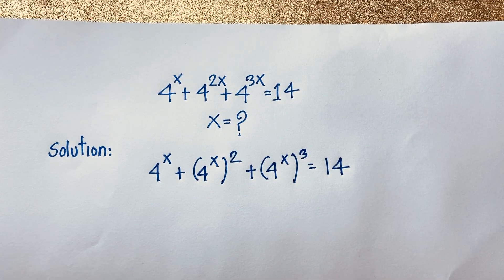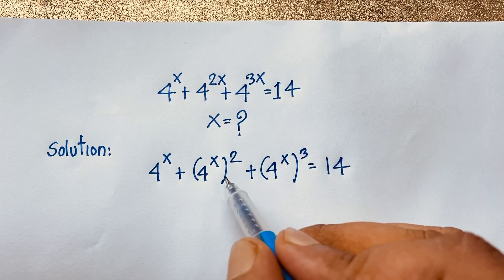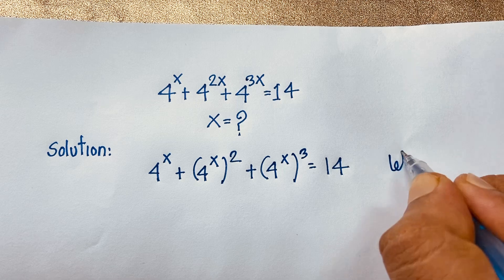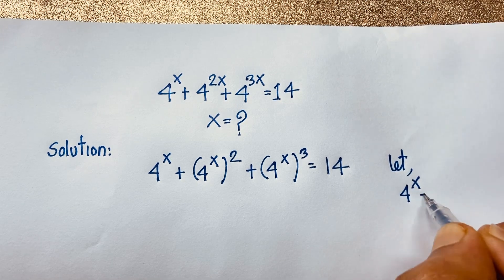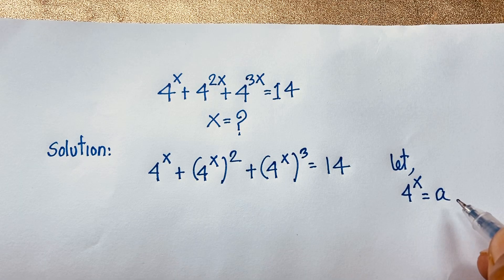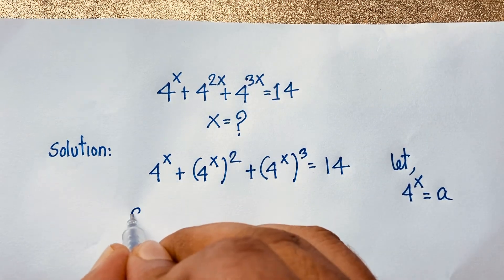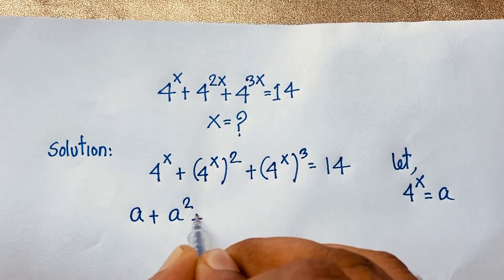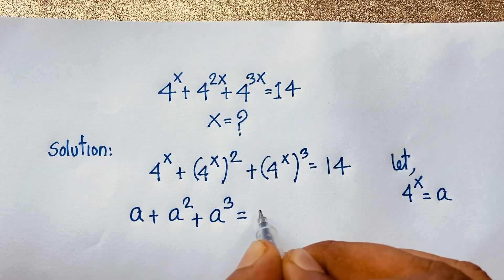Now you can see each term contains 4 to the power x. Let 4 to the power x equal a. So this expression becomes: a plus a squared plus a cubed is equal to 14.